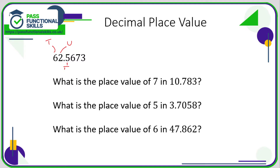The first column after the decimal point is your tenths column, the second is your hundredths column, the third is your thousandths column, and the fourth is your ten-thousandths column. As we go to the right, each column is ten times smaller than the one to the left. It's unlikely you'll be working beyond two or three decimal places, so you just need to think about tenths, hundredths, and thousandths.